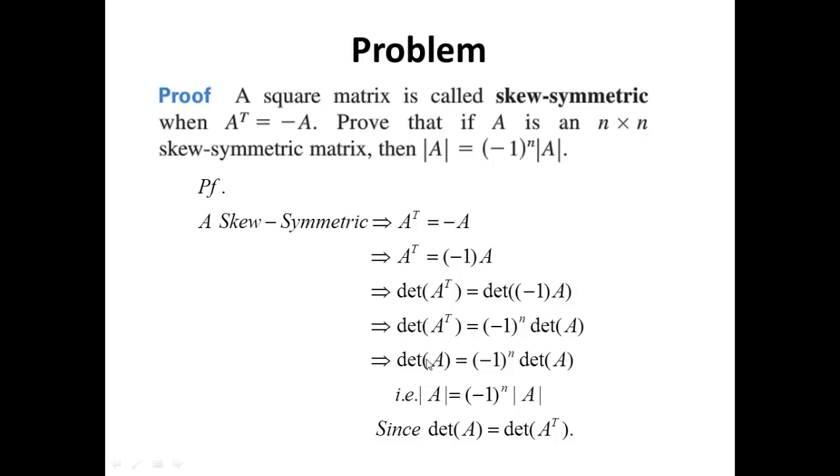But the determinant of A equals the determinant of A transpose. So that equals determinant of A, negative 1 to the n, determinant of A. I.e., I have exactly what I'm trying to prove. So I'm done.